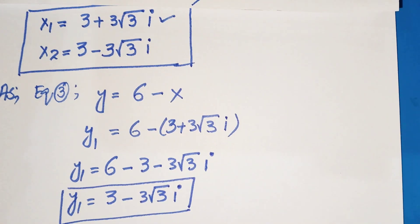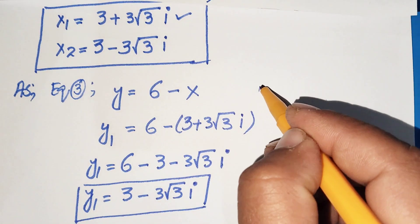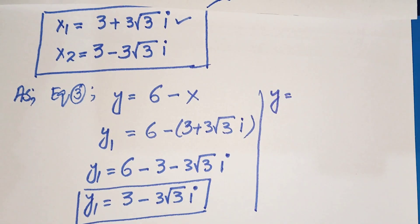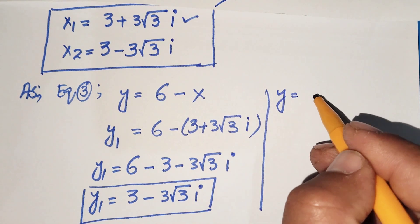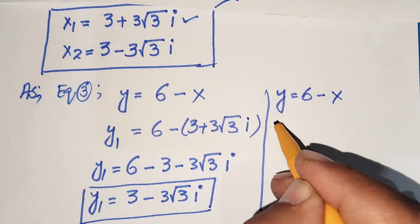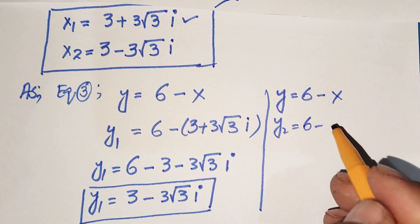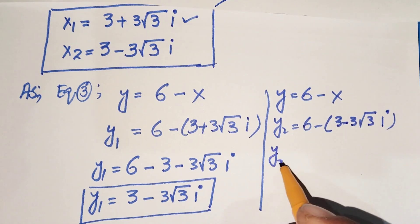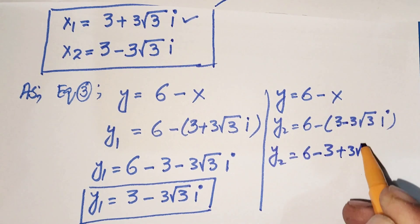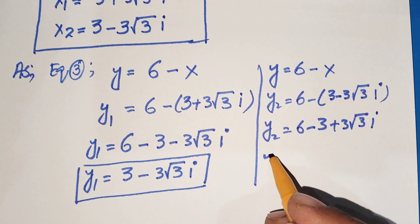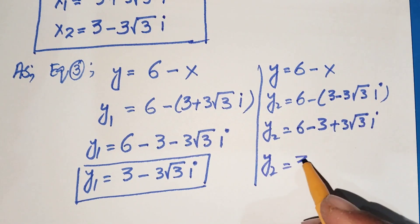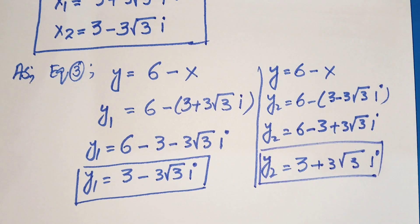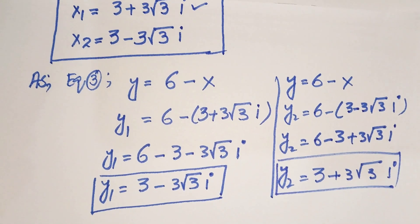Similarly, finding y2 by substituting x2: y2 equals 6 minus (3 minus 3 square root of 3 i), which gives y2 equals 6 minus 3 plus 3 square root of 3 i, so y2 equals 3 plus 3 square root of 3 i.